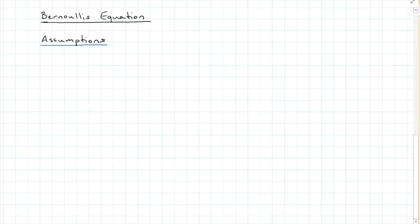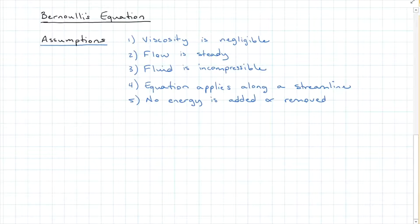So we're going to take Euler's equation to the next level with Bernoulli's equation, and there's a couple of assumptions. First, viscosity is negligible. Second, the flow is steady. Third, the fluid is incompressible. Fourth, the equation applies along a streamline. And last, no energy is added or removed.